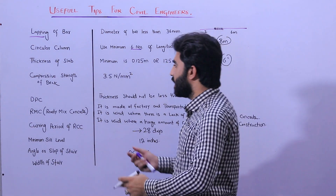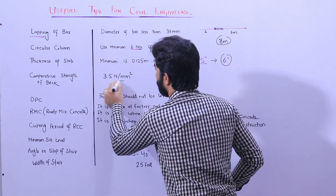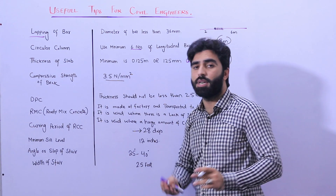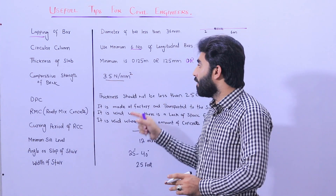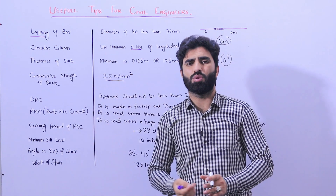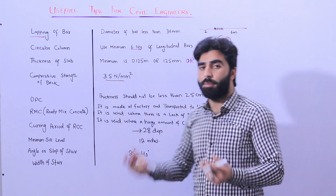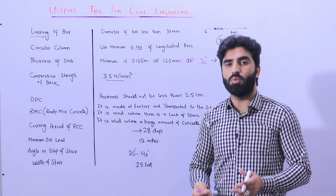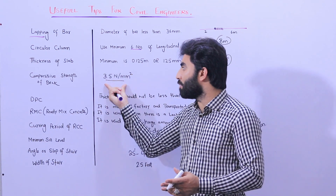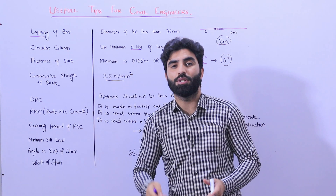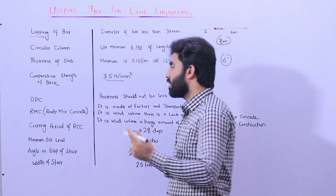The next tip is compressive strength of brick. The minimum compressive strength of brick is 3.5 Newton per mm². This is the minimum — if you have less than this, the brick is not acceptable. If you are making construction of a house from brick masonry, remember 3.5 N/mm² is the minimum. You can increase it depending on the quality — first class, second class, etc.